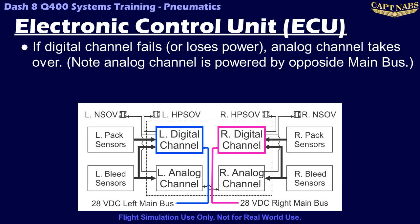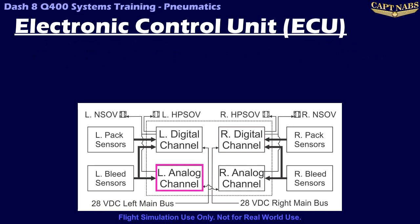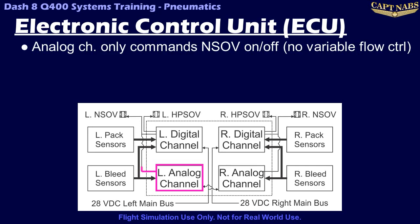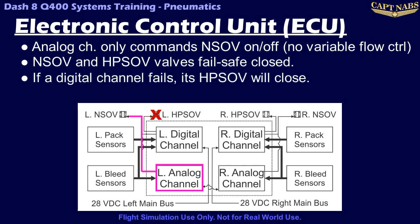For example, if we lose DC main bus power on the left side, the left digital ECU channel will stop working as it has no power. However, the left analog channel is powered from the right main bus and can take over operation of the left engine bleed system. Operation in analog mode is much simpler. In analog mode, the nacelle shutoff valve can only be commanded open or closed. The valve does not partially open to help regulate flows or balance the load in analog mode — the bleed system is either on or off. Additionally, the analog channel does not have any control over the high pressure shutoff valve, so the high pressure shutoff valve will fail closed. Only low pressure bleed air can be supplied from this particular bleed source in that case.